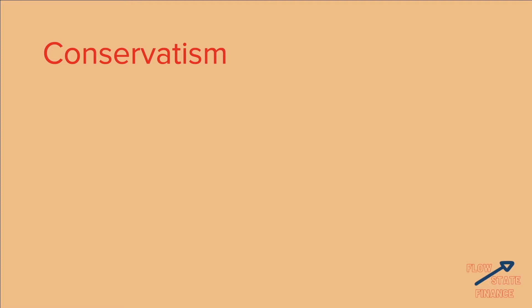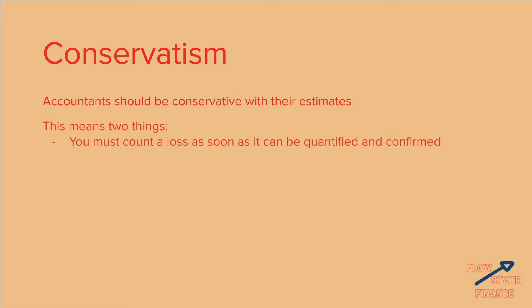Now let's talk about conservatism. Conservatism is the idea that accountants should be conservative with their estimates, and this means two things. The first is that you must count a loss as soon as it can be quantified and confirmed — any loss must be counted as soon as you know the value of the loss and you've confirmed that it was in fact a loss.